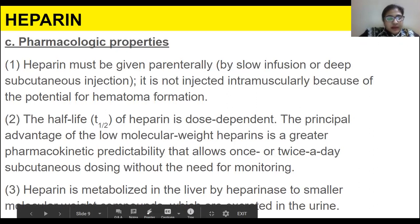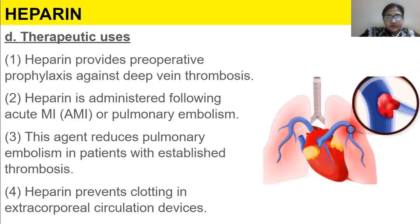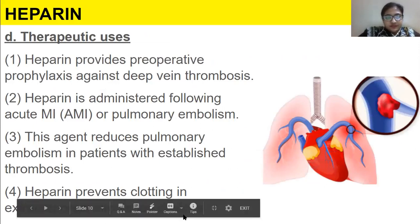Heparin is metabolized in the liver by heparinase to smaller molecular weight compounds, which are excreted in the urine. Regarding therapeutic uses, heparin provides preoperative prophylaxis against deep vein thrombosis.